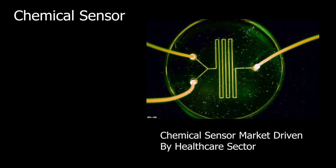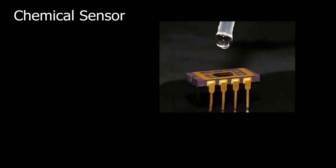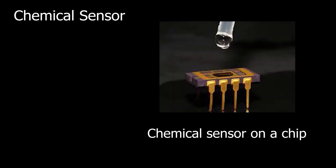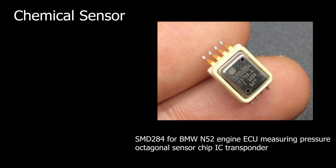Number 2: Chemical sensors. A chemical sensor is a self-contained analytical device that can provide information about the chemical composition of its environment, that is, a liquid or gas phase. The information is provided in the form of a measurable physical signal that is correlated with the concentration of a certain chemical species. Two main steps are involved in the functioning of a chemical sensor: recognition and transduction.